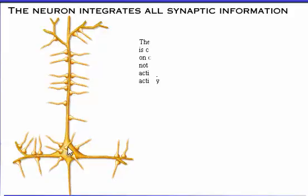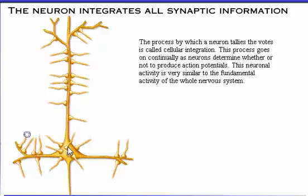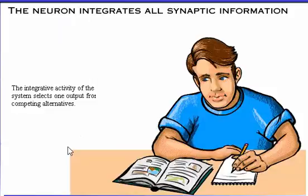The process by which a neuron tallies the votes is called cellular integration. This process goes on continually as neurons determine whether or not to produce action potentials. This neuronal activity is very similar to the fundamental activity of the whole nervous system. The integrative activity of the nervous system selects one output from all the competing alternatives.